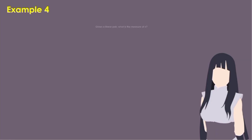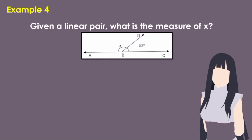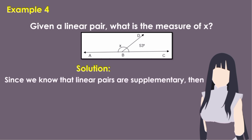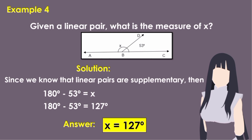Example 4: Given a linear pair, what is the measure of x? Since linear pairs are supplementary: 180 degrees minus 53 degrees equals x. 180 minus 53 equals 127 degrees. Therefore, x is equal to 127 degrees.